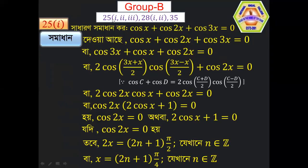We will now solve problem 25 with a general solution. cos x + cos 2x + cos 3x = 0. First, we write the terms with the largest and smallest angles together. We use the identity cos C + cos D = 2cos((C+D)/2)cos((C−D)/2), giving 2cos(2x)cos(x) + cos 2x = 0, which simplifies to cos 2x(2cos x + 1) = 0.